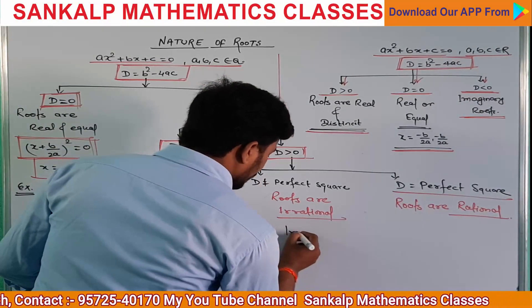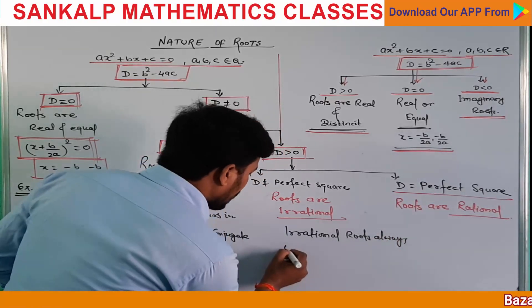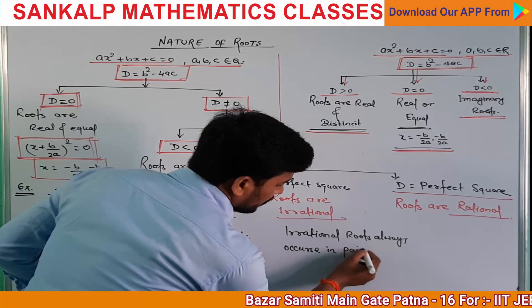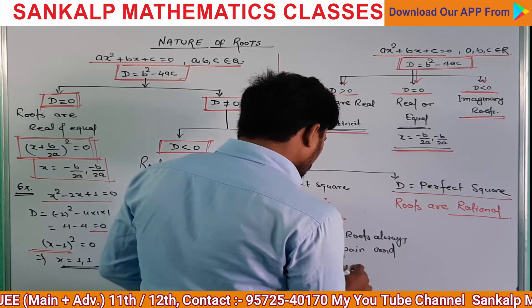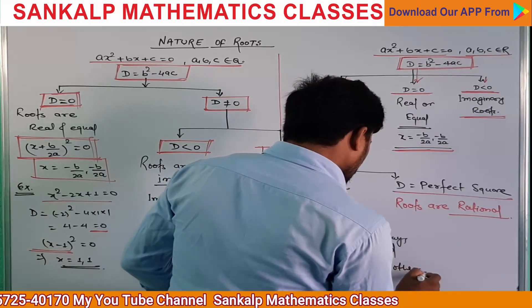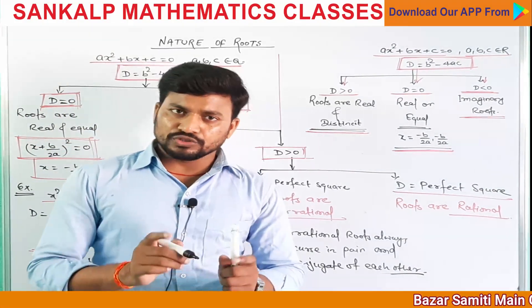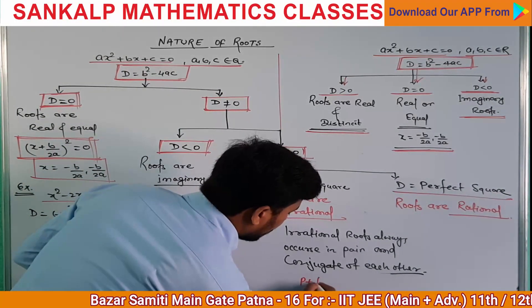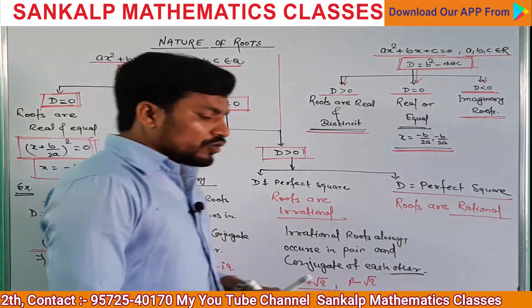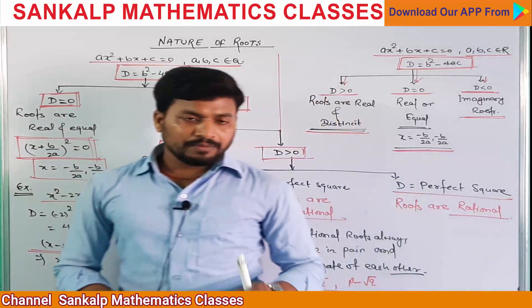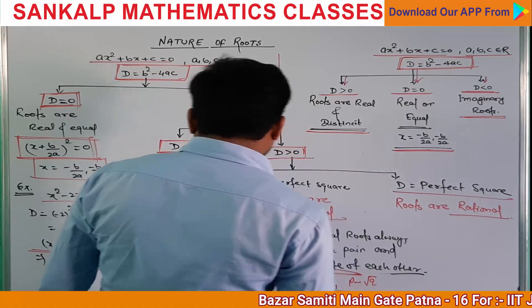Irrational roots always occurs in pair and conjugate of each other। Irrational roots भी pair में आएगा और एक दूसरे का conjugate होगा। मतलब अगर एक root p + √q है, तो other root must be p - √q। यही चीजें हम लोगों का nature of roots से है — conjugate को highlighted कर लो।